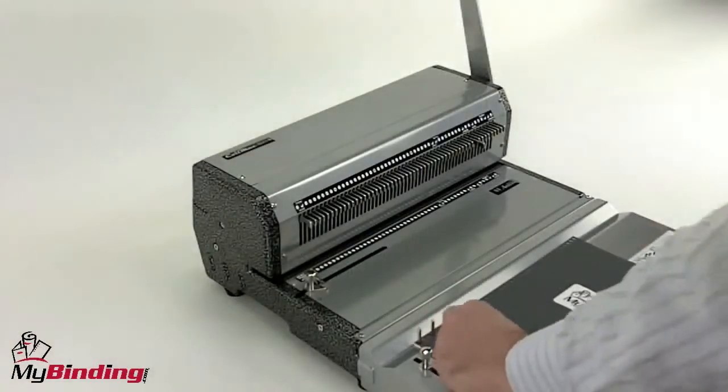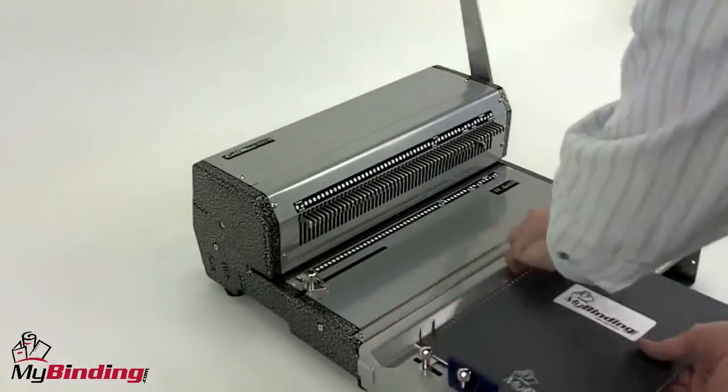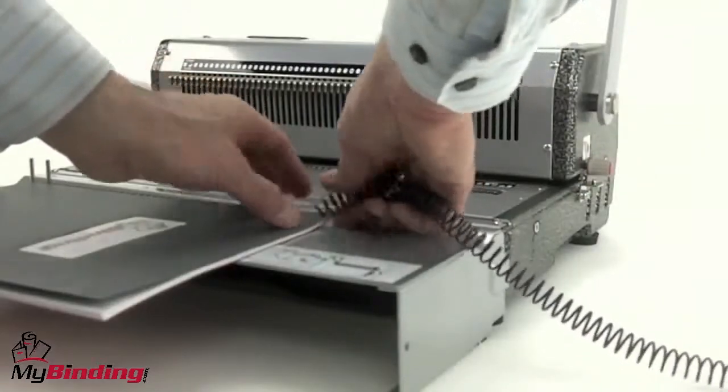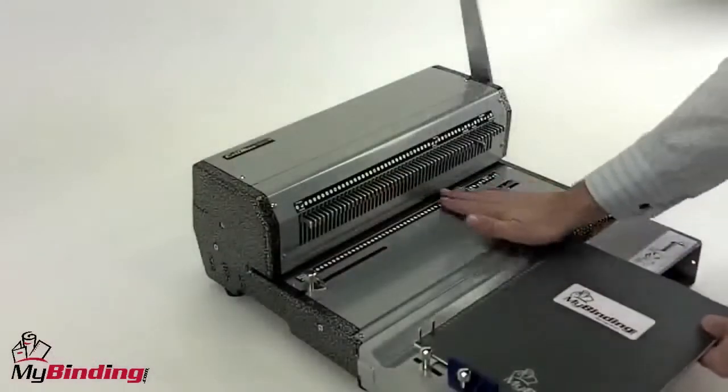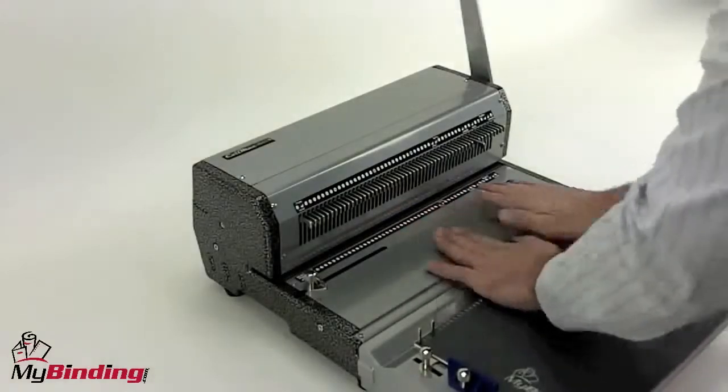Threading one end of your project onto the teeth, hold everything into place, and you can begin to insert your coil by hand. Once you've threaded the first few holes, you can use your hand in the groove to slide things along down much faster.